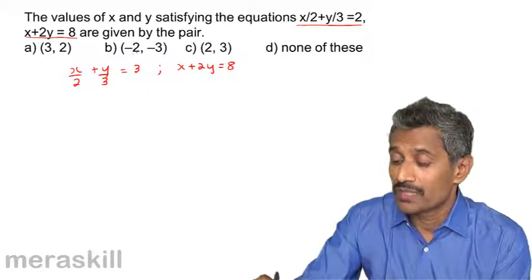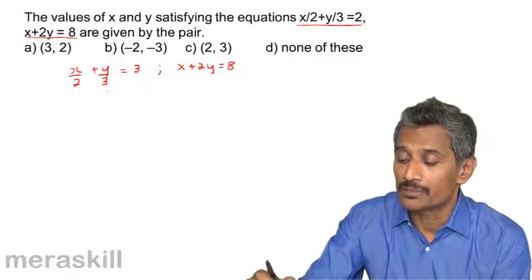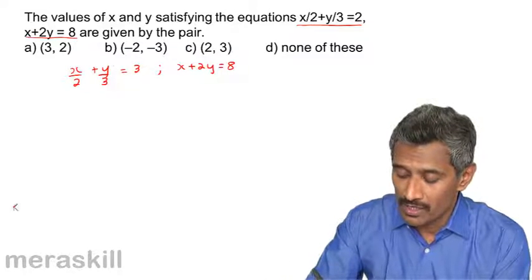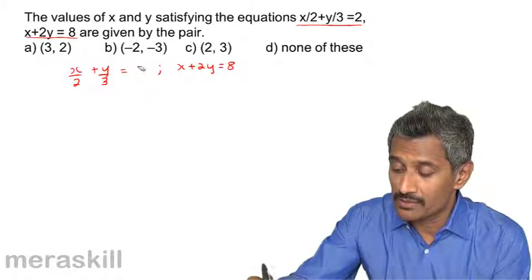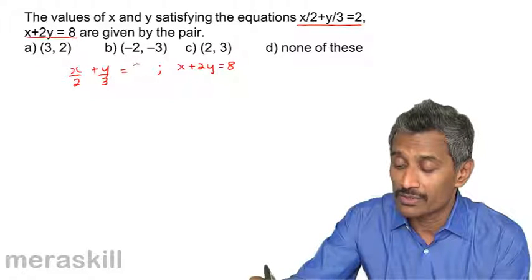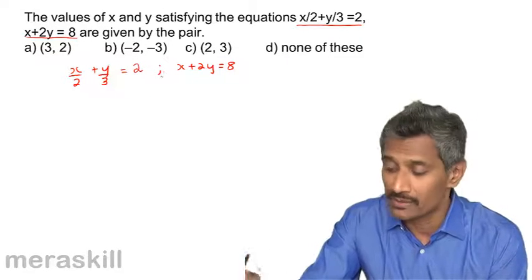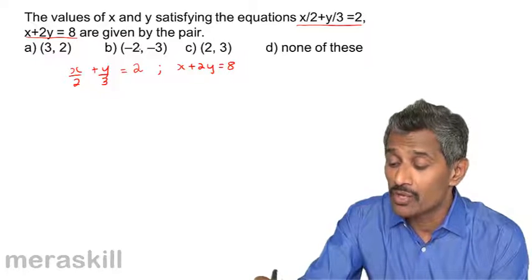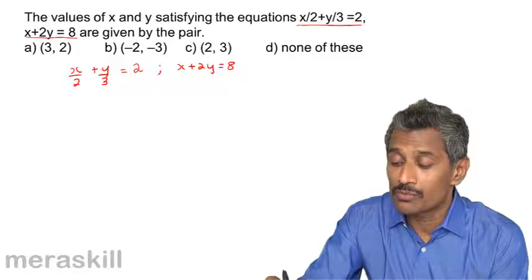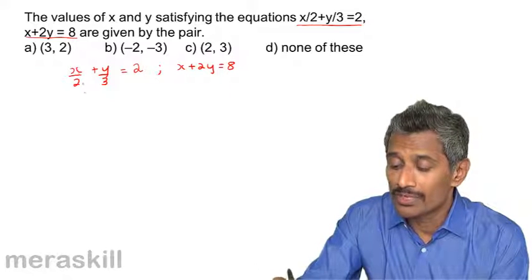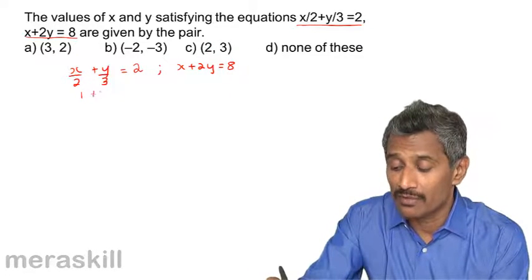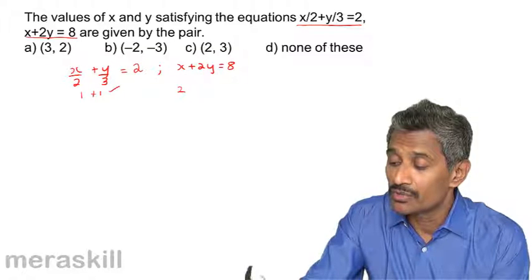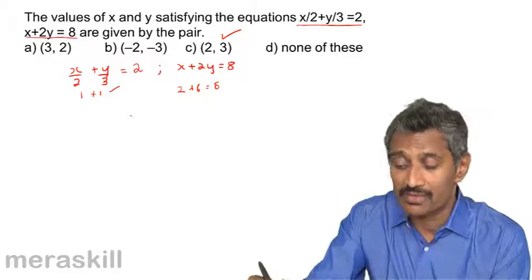We can try substitution. Our equation is x by 2 plus y by 3 equals 2, and x plus 2y equals 8. Let's check the pair x equals 2, y equals 3: 2 by 2 is 1, 3 by 3 is 1, 1 plus 1 equals 2. And 2 plus 2 into 3 equals 2 plus 6 equals 8. So this is the right answer.